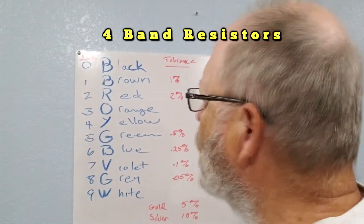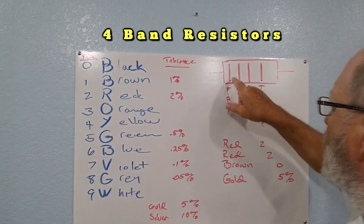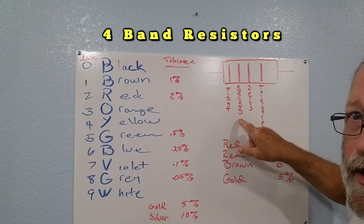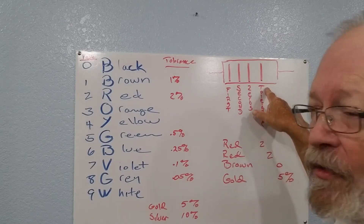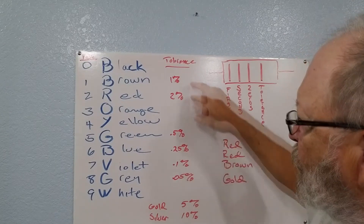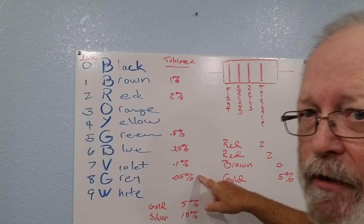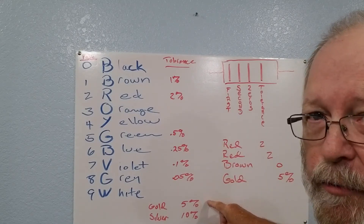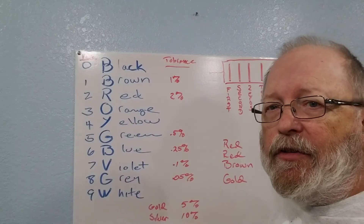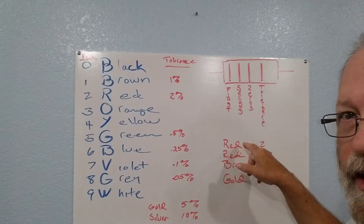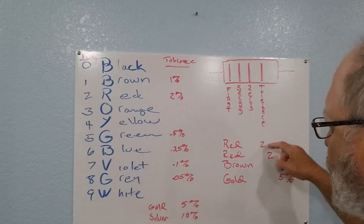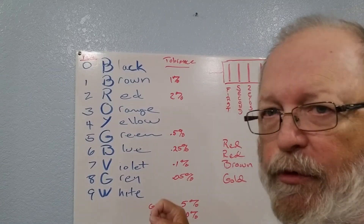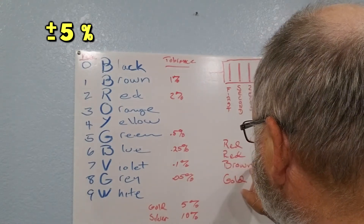We're going to talk about four-band resistors. The first band is the first digit, the second band is the second digit, the third band is how many zeros you put behind it, and the fourth band is the tolerance. Most of the time it's going to be gold or silver — gold is 5% and silver is 10%. For example, a 220 ohm resistor is red, red, brown, and gold — that's 220 ohms at 5%.